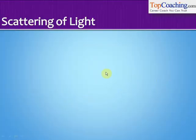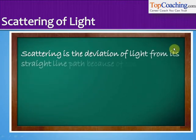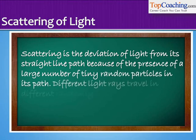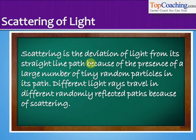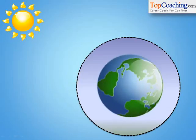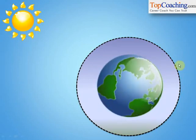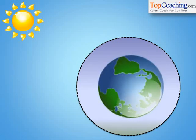Scattering is the deviation of light from its straight line path because of the presence of a large number of tiny random particles in the path. Different light rays travel in different randomly reflected paths because of scattering. If there is just vacuum, light travels in straight lines. But if there are small particles — particles of air, dust, or smoke — then light strikes these particles and gets scattered in all directions. That random reflection of light when it strikes a large number of particles is called scattering.